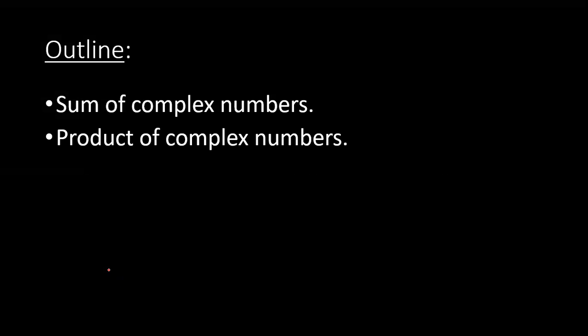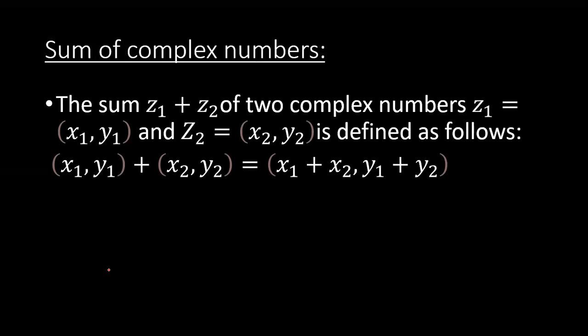Let's move toward the sum of complex numbers. The sum z1 + z2 of two complex numbers z1 = (x1, y1) and z2 = (x2, y2) is defined as (x1, y1) + (x2, y2) = (x1 + x2, y1 + y2).